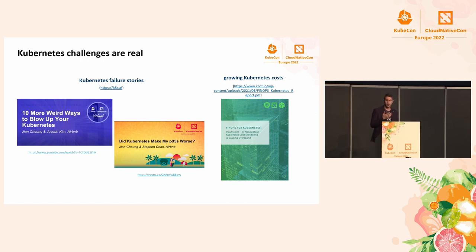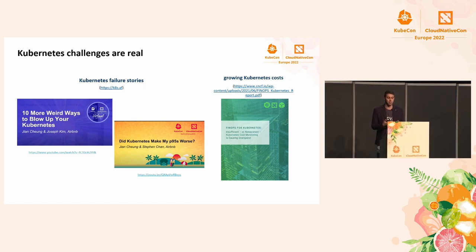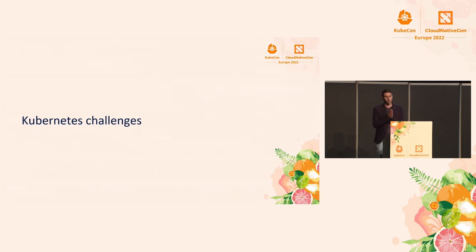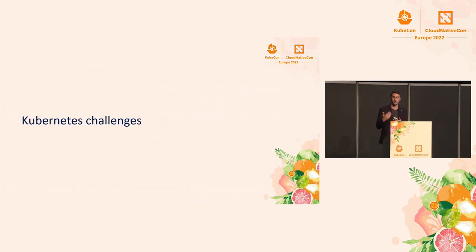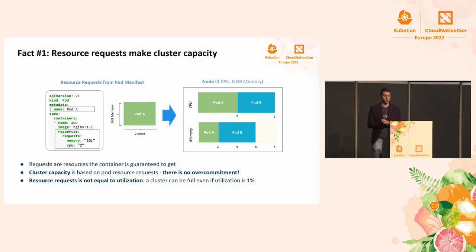The simple answer is that Kubernetes is a great platform to run containerized applications, but it requires applications to be carefully configured to ensure high performance and stability. Let's get back to the fundamentals and see how Kubernetes resource management works to better understand the main parameters that impact Kubernetes application performance, stability, and cost efficiency. We'll go through the six main key facts and their implications, starting from the first, which is resource requests.